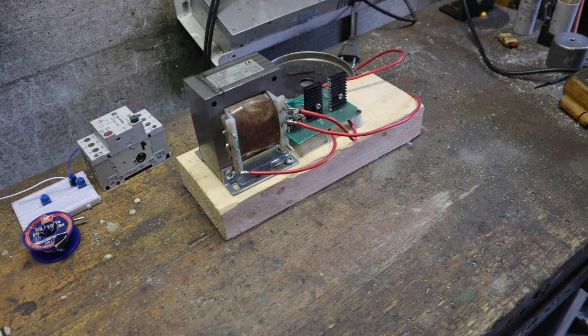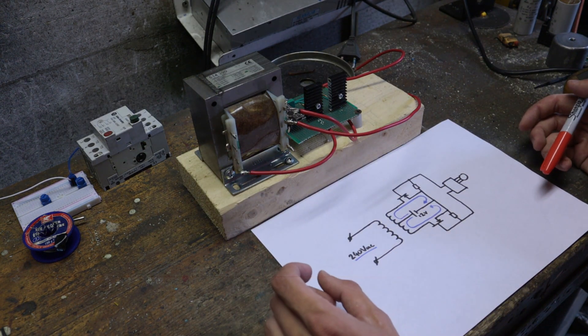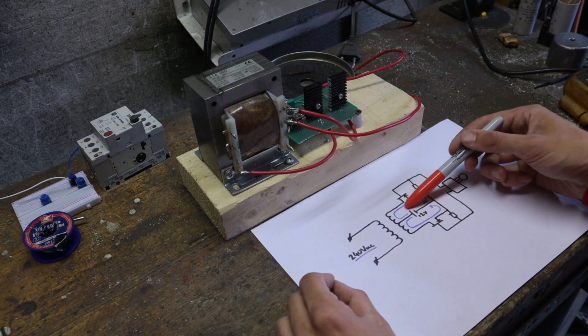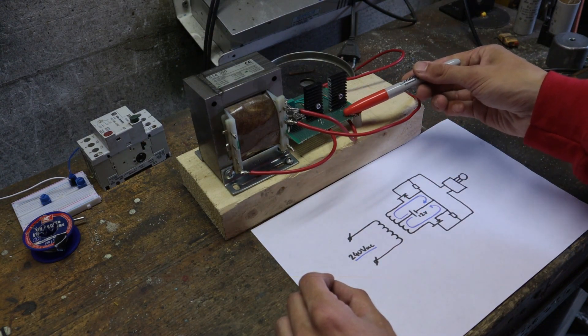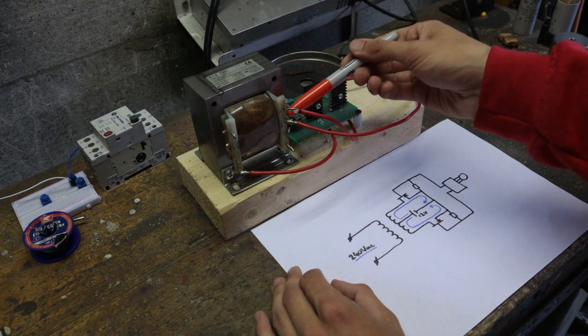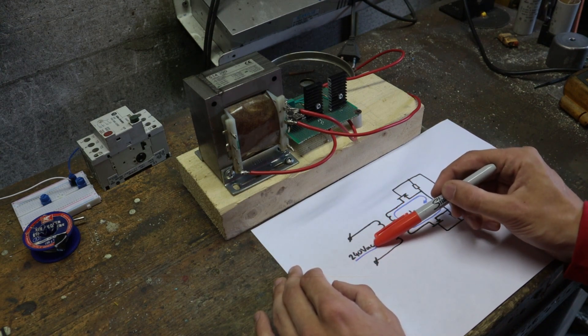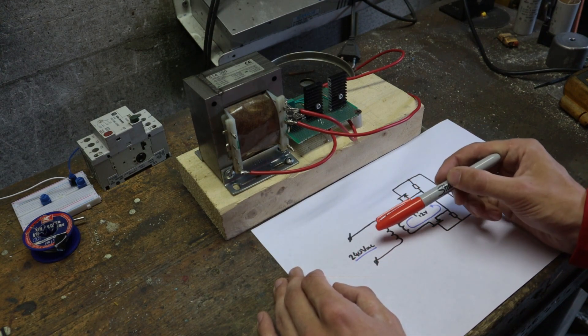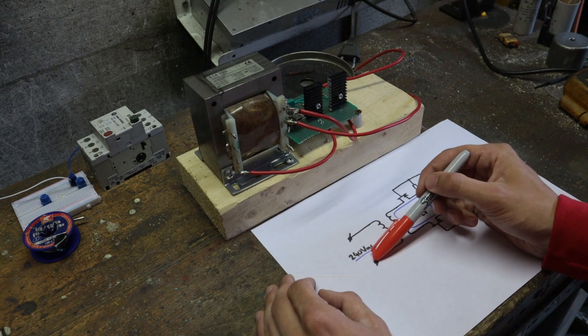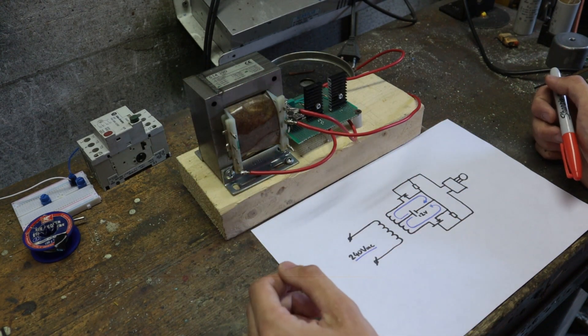So this is the inverter that we've already built, and this is a circuit diagram that belongs to it. It produces AC right here using this circuit board, which I've explained in the last video. That gets fed into a transformer over here, and that transforms it up to 240 volt AC on the output. And then in the last video, we connected this output to a fan, and then the fan starts to spin, so the inverter works.